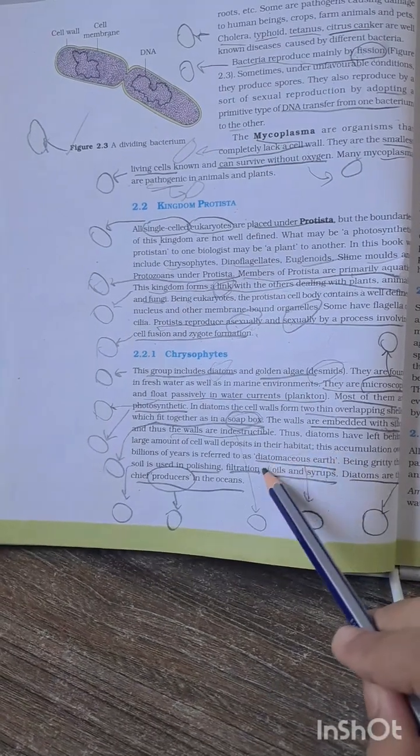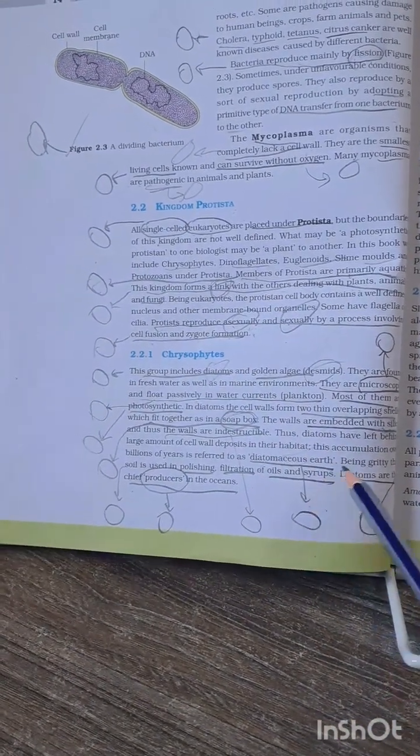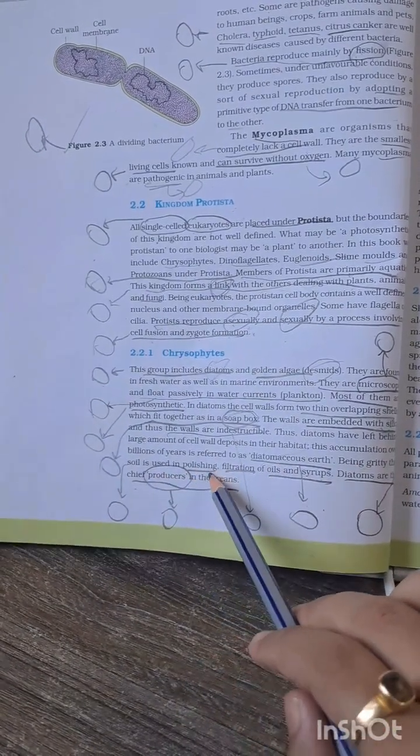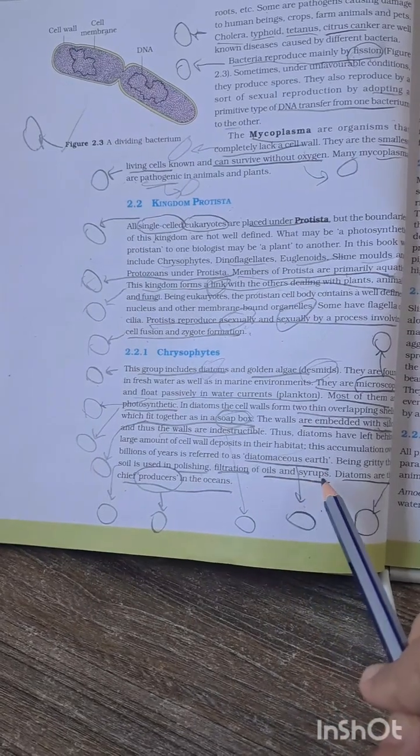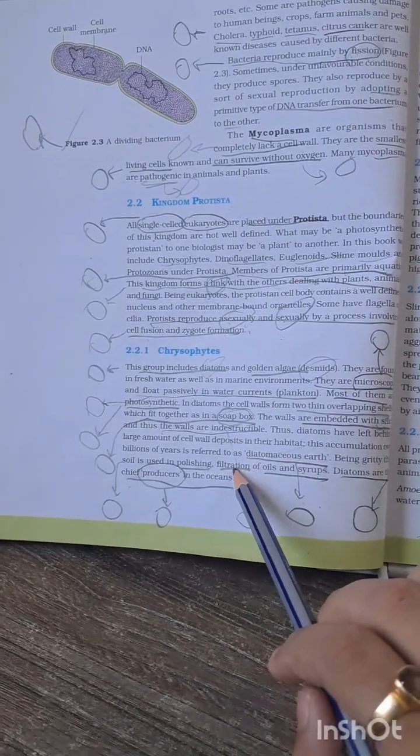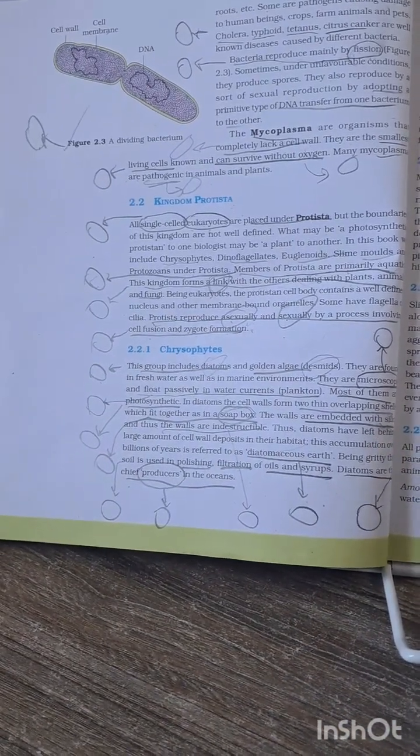Another probable MCQ from this page is very important: diatomaceous earth is Chrysophytes. You have to remember this. This diatomaceous earth is used in polishing, filtration of oil and syrups. You have to be very clear about this line. If other functions are given in the options, you have to be very careful.